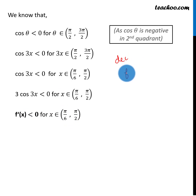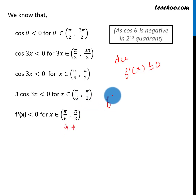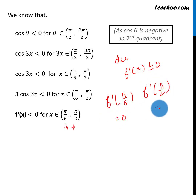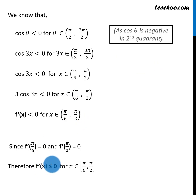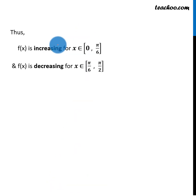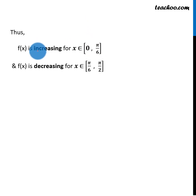We check that f'x is less than or equal to 0. Checking the endpoints, f'(pi/6) and f'(pi/2) are both 0, so we include the endpoints with closed brackets. Therefore f'x is less than or equal to 0 on [pi/6, pi/2], and our function is decreasing on this interval. In summary, the function is increasing on [0, pi/6] and decreasing on [pi/6, pi/2].